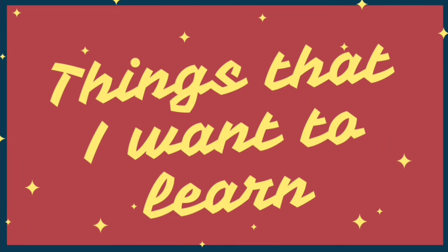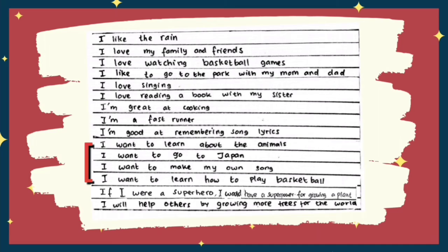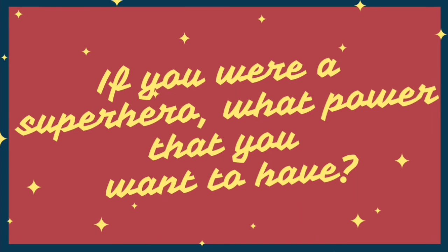Next, we're going to write down about the things that you want to learn. Write down at least three sentences too. Here are some examples: I want to learn about animals. I want to go to Japan. I want to make my own song. I want to learn how to play basketball.